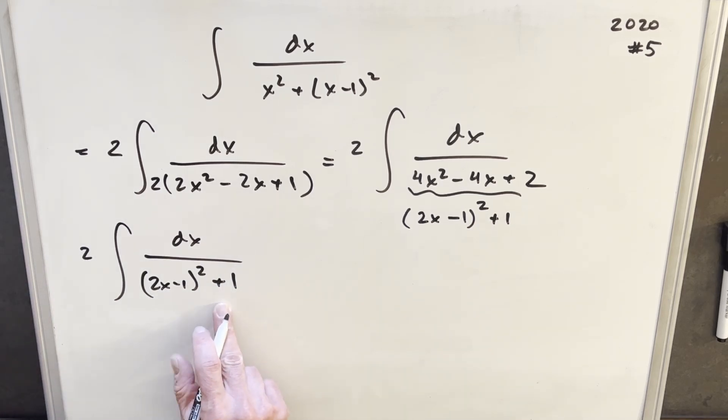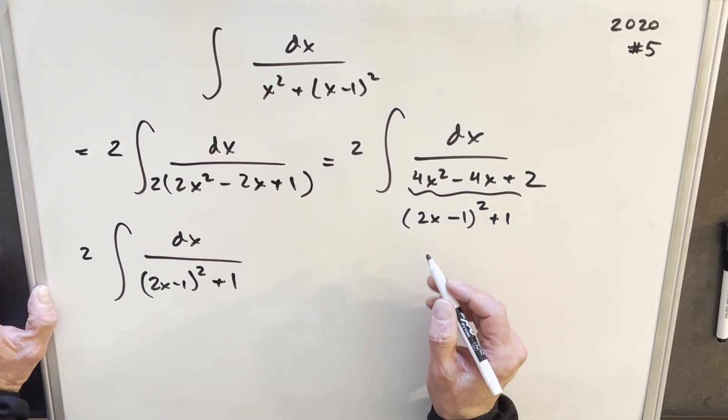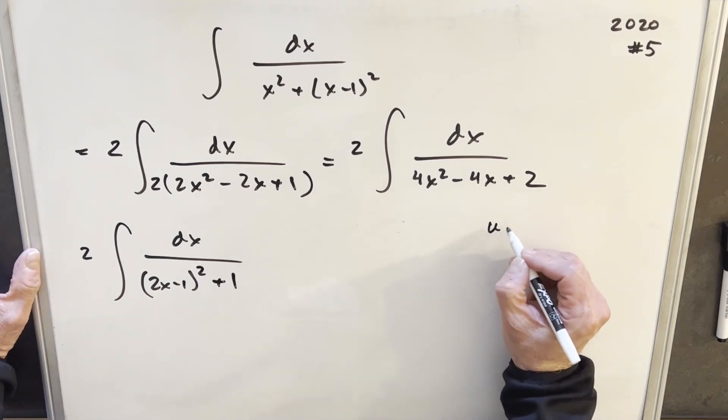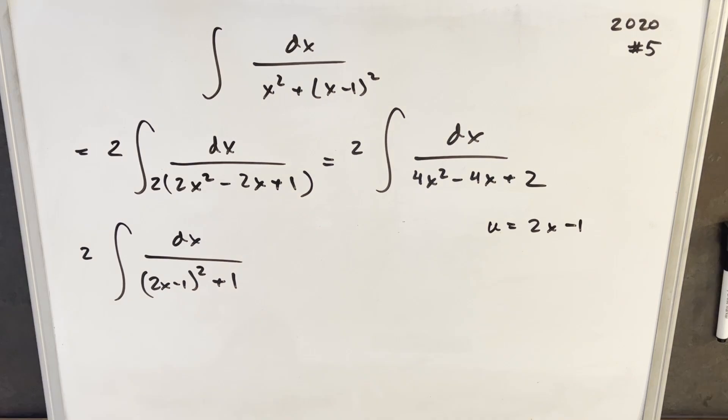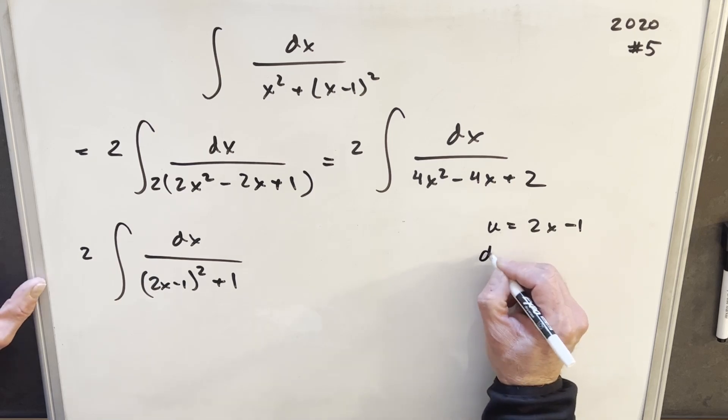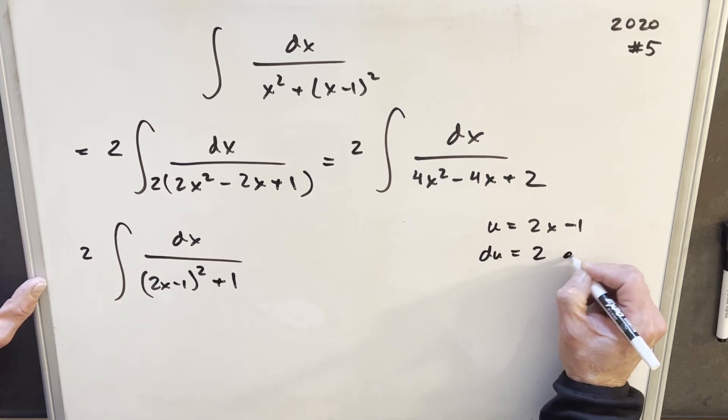Now I think we're in good shape to do a u substitution. We're in pretty good shape for the arctan formula, but we just need to do this u substitution. So we'll say u equals 2x minus 1. We'll take a derivative, du equals 2 dx.